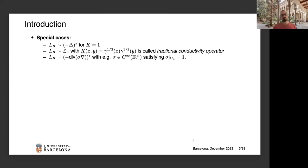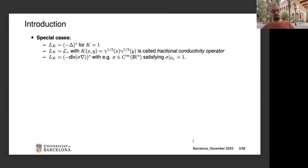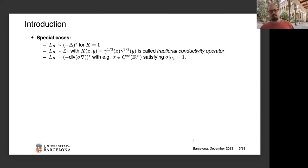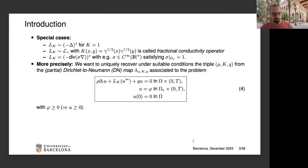Another interesting class of examples are fractional powers of second-order elliptic partial differential operators; more simply, one can take minus the divergence of σ times the gradient. For example, σ could be a smooth, uniformly elliptic function equal to 1 in the exterior. Here and throughout the talk, by 'exterior' of a domain Ω, I mean the complement of the closure of Ω.